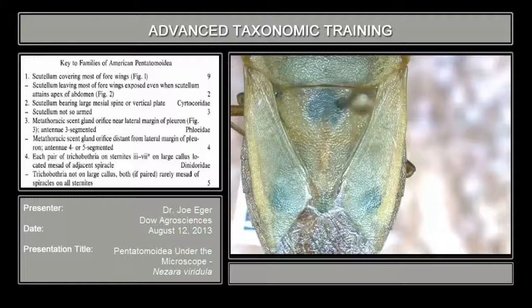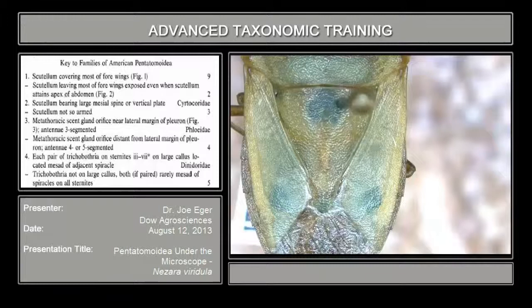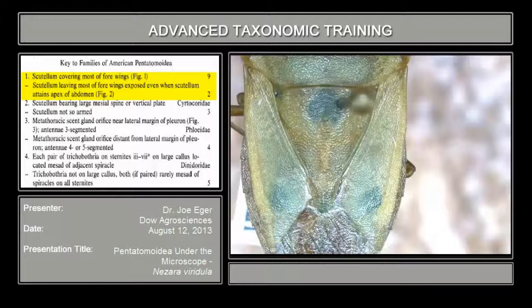It's also strongly attracted to light, which puts it probably into some packing houses and places where materials are received. We're going to use Ralston and McDonnell 1979 to key this out, starting with the key to families of American Pentatomoidea. The first couplet: your choices are scutellum covering most of the fore wings, or leaving most of fore wings exposed. You can see the fore wings are quite exposed on this bug.